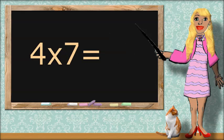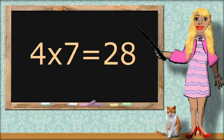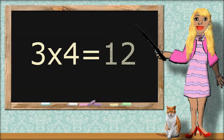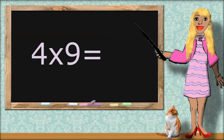4 times 7 equals... 28. 3 times 4 equals... 12. 4 times 9 equals... 36.